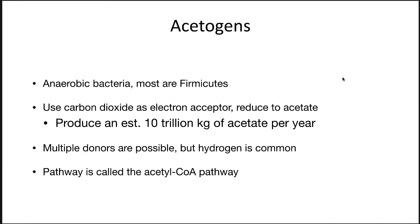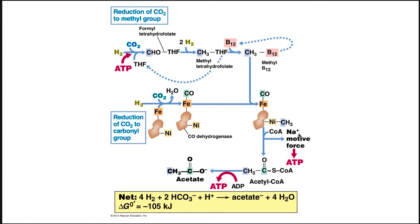Multiple electron donors are possible, but hydrogen is probably the most common. The pathway is called the acetyl-CoA pathway, also called the acetyl-reductive pathway discussed in the previous lecture on the carbon cycle. They link the creation of acetyl-CoA to the formation of a sodium motive force, which can then be dissipated to generate ATP. In addition, this pathway at its end will transfer the chemical energy in acetyl-CoA to ATP via substrate-level phosphorylation, producing acetate as an end product. So this pathway actually generates energy both by a sodium motive force and by substrate-level phosphorylation.